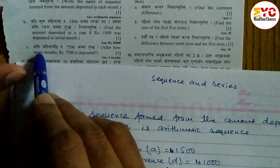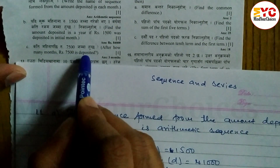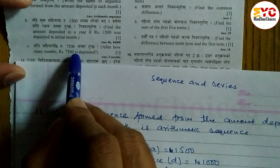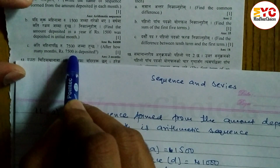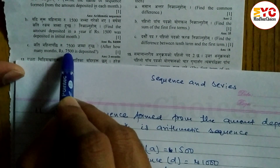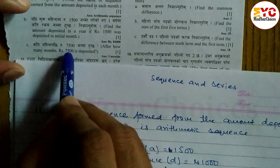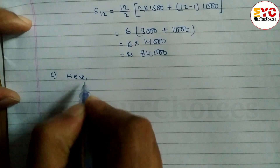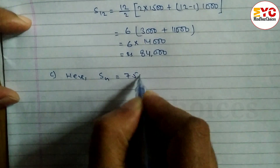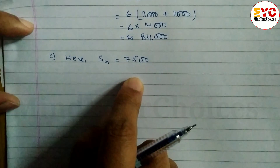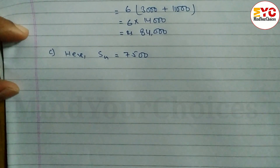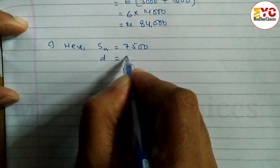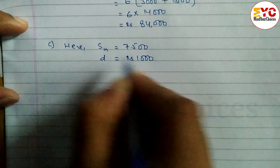Part C: After how many months is Rs. 7,500 deposited? We need to find n when the deposit amount equals 7,500. So we set Sn = 7500 and find the value of n. The value of d is Rs. 1000.